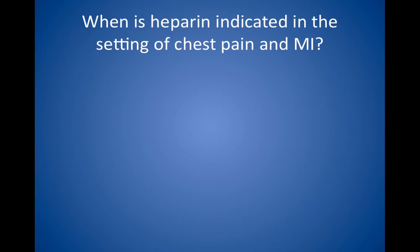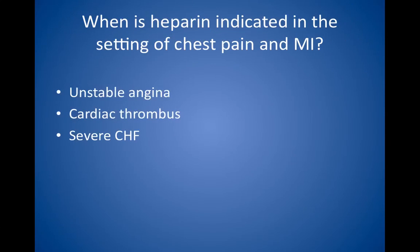When is heparin indicated in the setting of chest pain and myocardial infarction? Heparin should be started if unstable angina is diagnosed, if the patient has a cardiac thrombus, or if severe congestive heart failure is seen on echocardiogram. The Step 2 examination will not ask about other indications, which are not as clear-cut. Do not give heparin to patients with contraindications to its use, such as active bleeding.